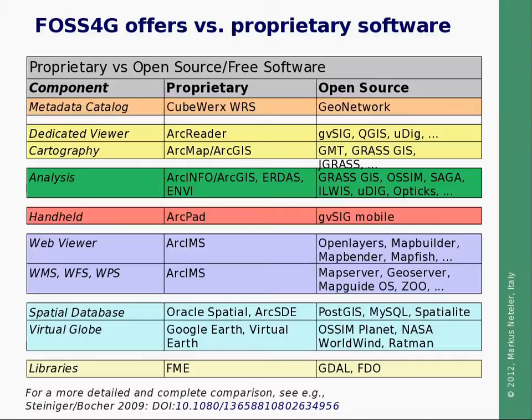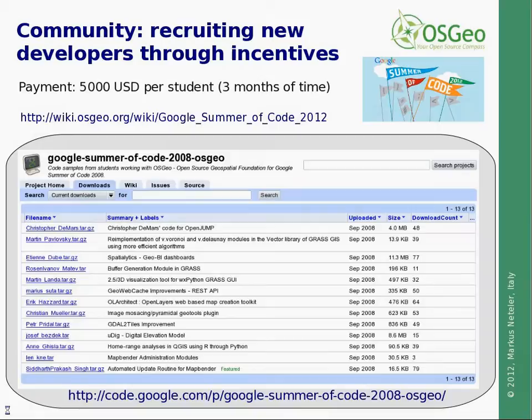Between volunteer work, there are also different means of gaining new developers. There is important support from Google through the Google Summer of Code. Each year, Google is donating more than 100,000 US dollars to OSGEO, which are then given to a set of students. These students apply for a project in the different OSGEO projects and suggest what software extension to develop. They have three months of time, and upon success they receive 5,000 US dollars.